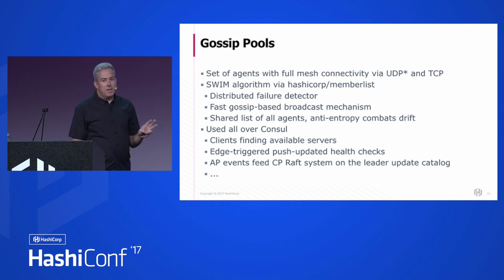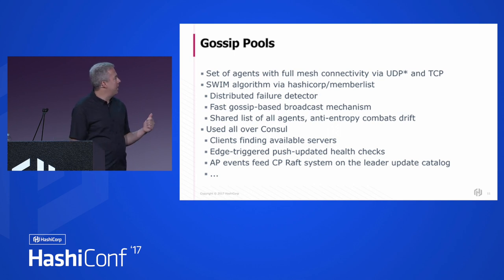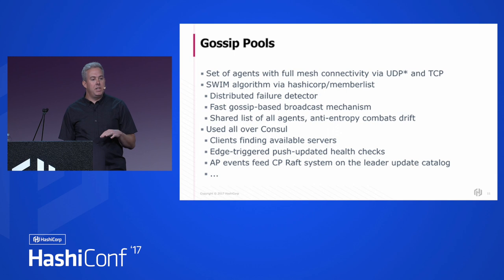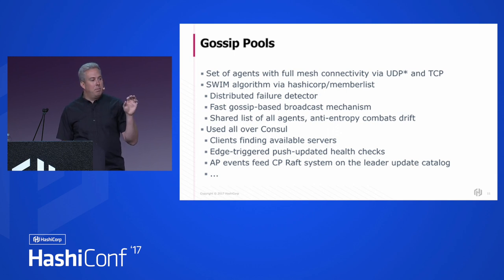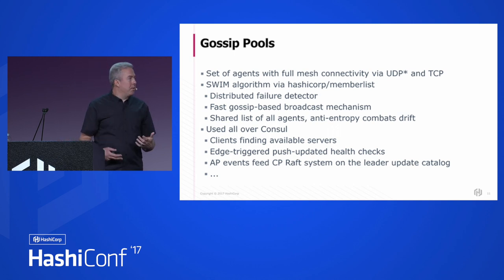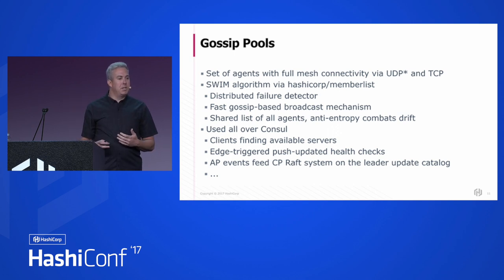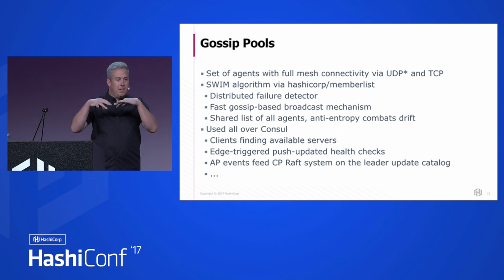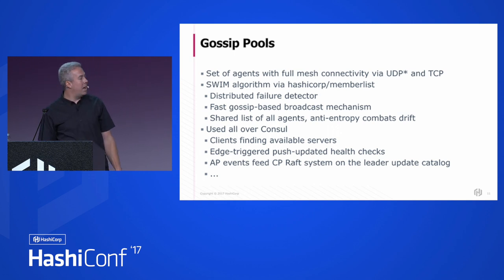There are three really interesting properties useful for a service discovery system like console. First, it forms a distributed failure detector — the machines, by participating in this algorithm, can figure out when one of their peers is no longer available. Unlike a central thing that might have to check 10,000 machines, by the process of those 10,000 machines participating in this algorithm together, they can learn who's alive and who's not, and it scales really well.